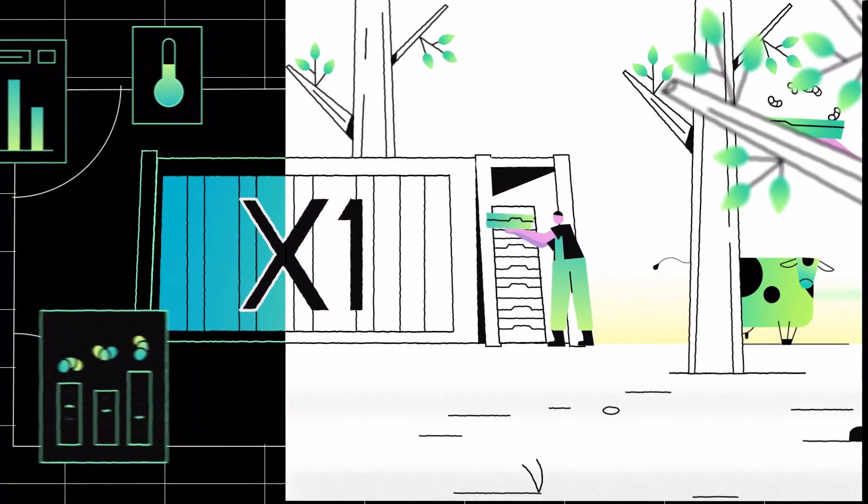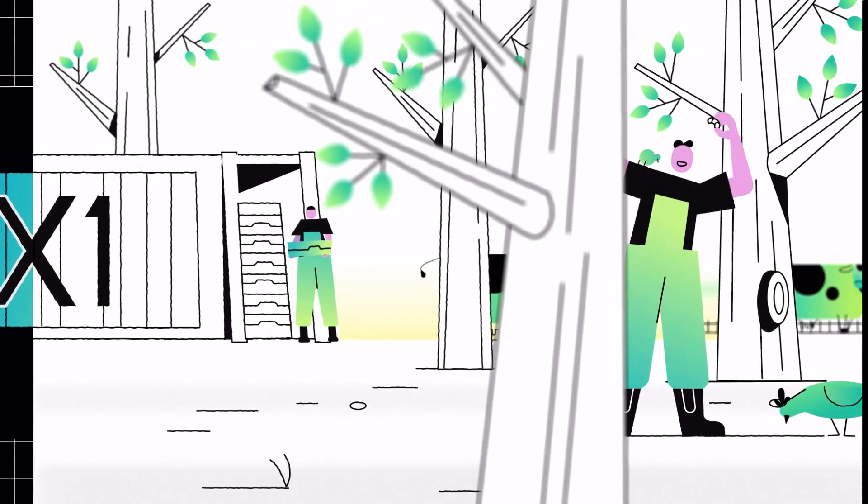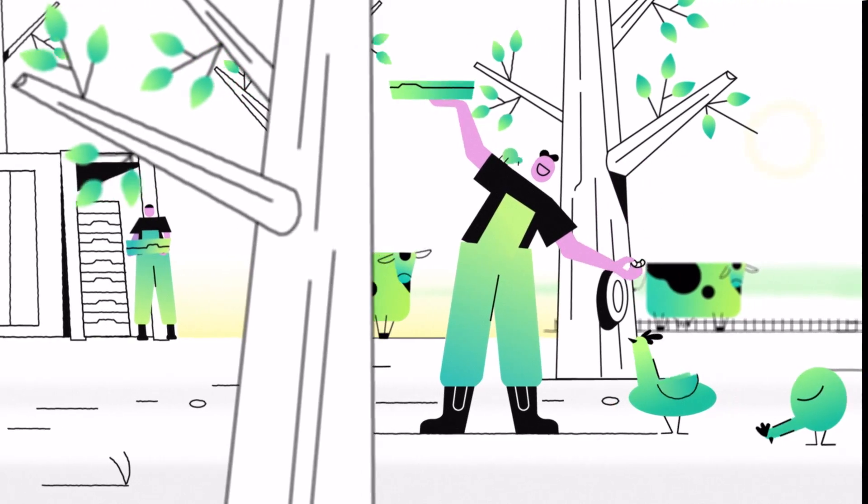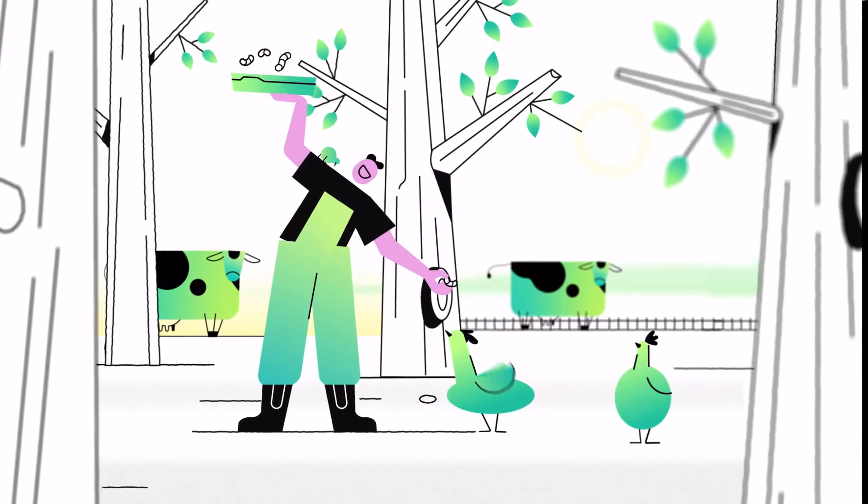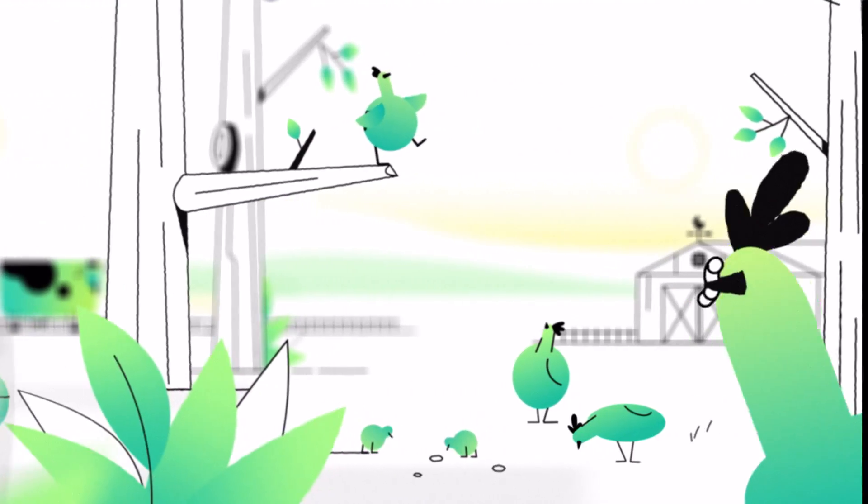The harvested larvae become food for farm animals, replacing soy, one of the largest contributors to deforestation. By localizing the food supply chain, we cut down food waste and emissions, completing nature's cycle.